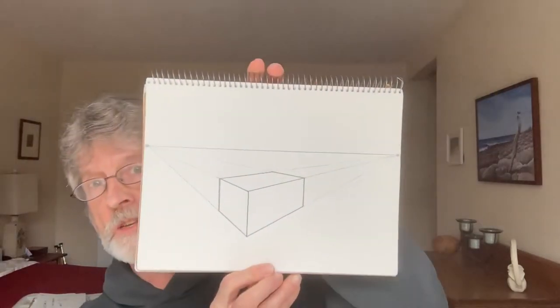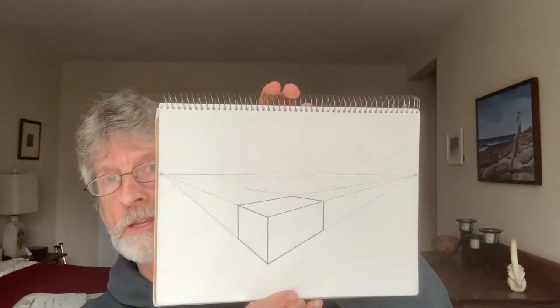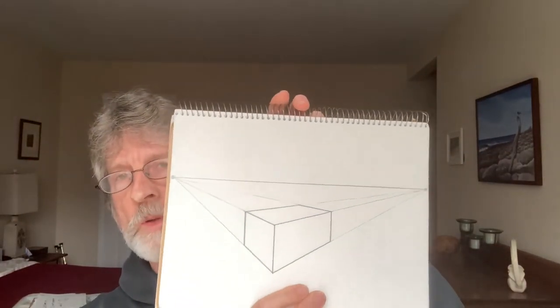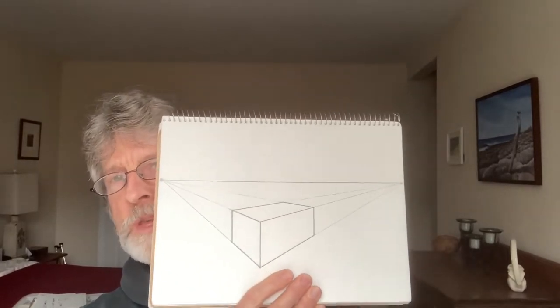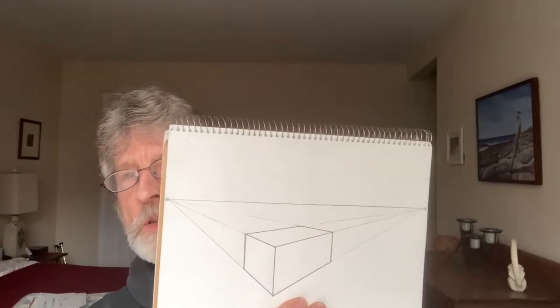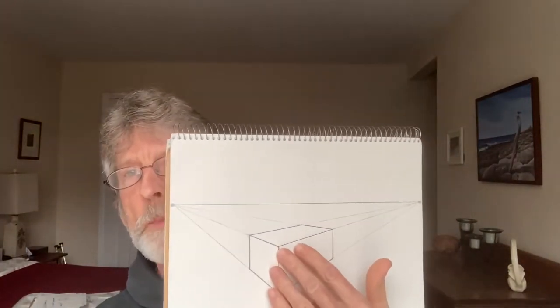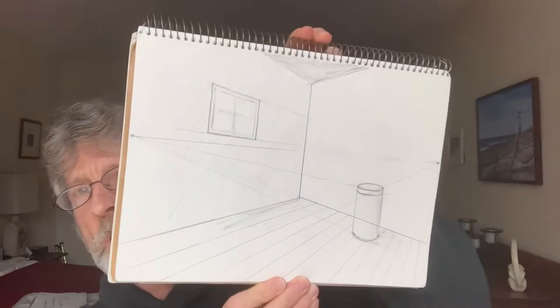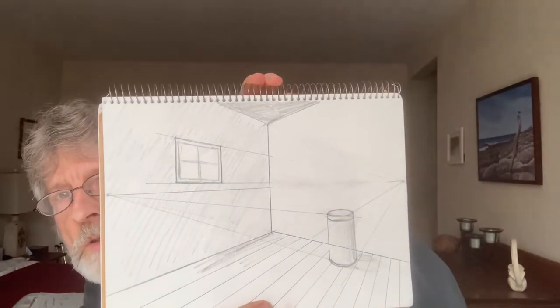Hey guys, Mr. French here. If you watched my other video, you already know how to do cubes in two-point perspective from the outside using the vanishing points. But what about if you wanted to be inside that cube? You don't have to do it from the outside — you could be inside of it. There could be doors and windows, it could be a building, you could be inside of a room. I'll show you how to make a giant cube and be inside of it using two-point perspective. It's a little tricky, but once you know the secret it's easy.